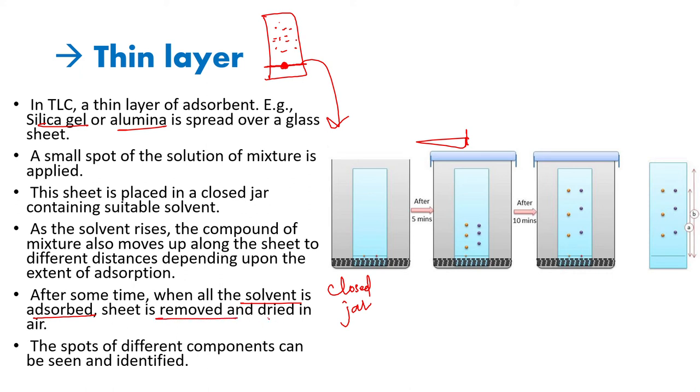The spots of different components can be seen and identified. The adsorption of each component of the mixture is expressed by a retention factor. Its formula is the distance moved by one component divided by the distance moved by the solvent. That is, a divided by b.